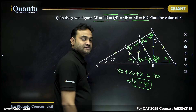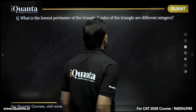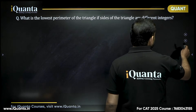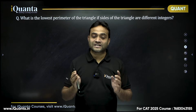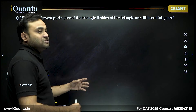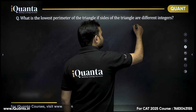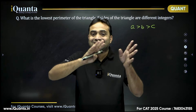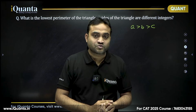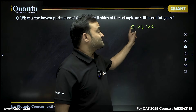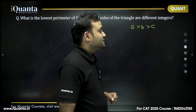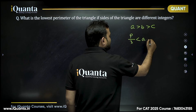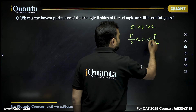Next question: What is the lowest possible perimeter of a triangle if all three sides are different integers? We need three distinct integer values a > b > c satisfying the triangle inequality.